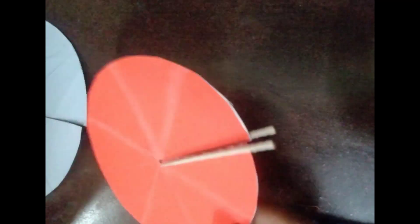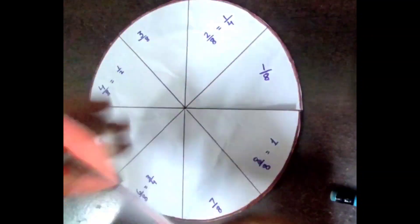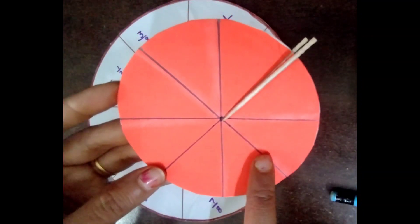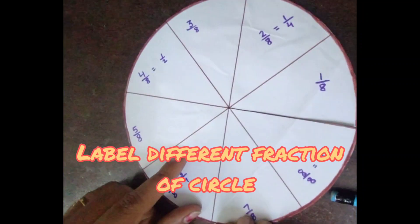Toothpicks are pasted in this way on the big circle. We write different fractions.